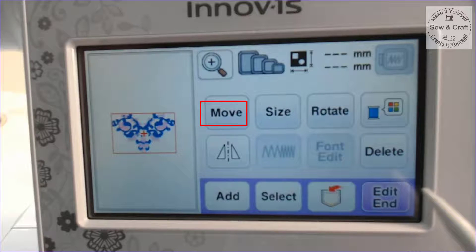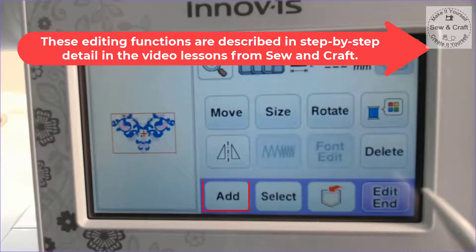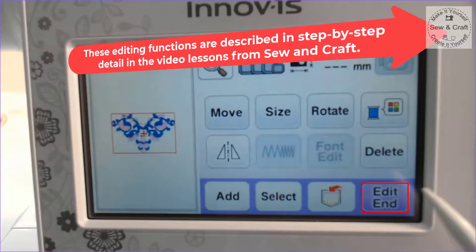On the editing screen I can move my design, resize it, rotate it, change colors inside the design, mirror image it, or delete it. I can also add another design. If I wanted to add a name I could do that. If I wanted to add another design to create a combination I could do that. I can even save this if I want to embroider it more than once. Once I'm finished editing I'll simply click Edit End to go to the next screen.